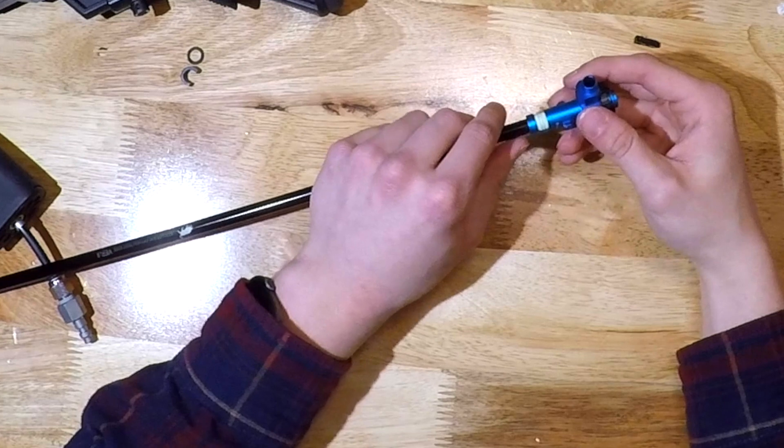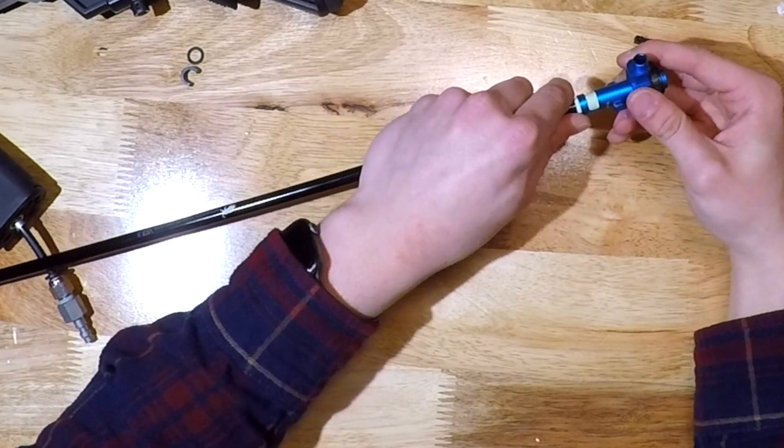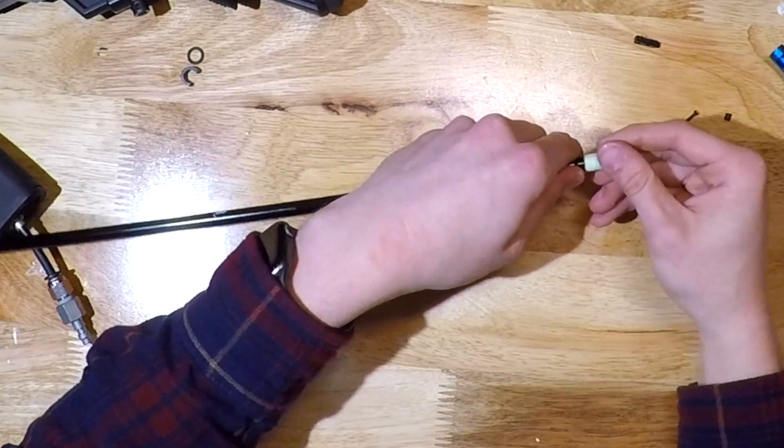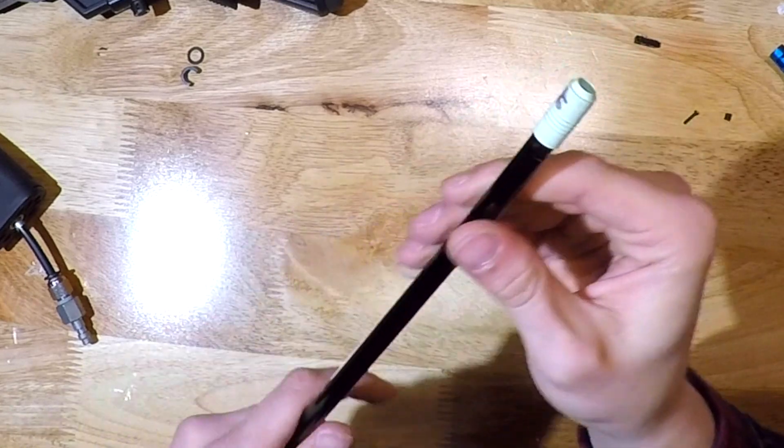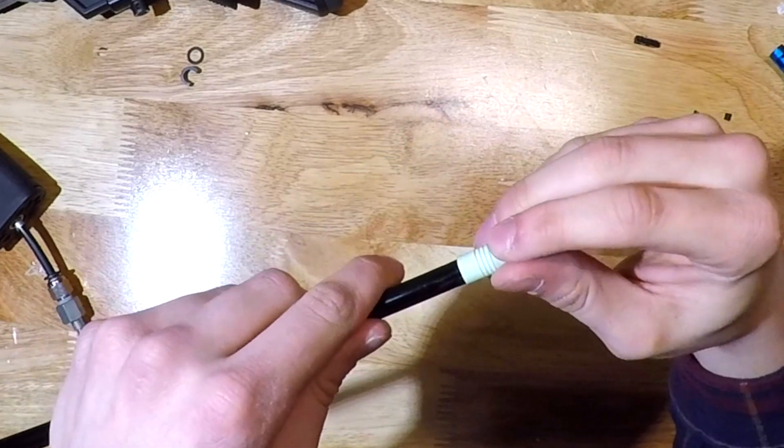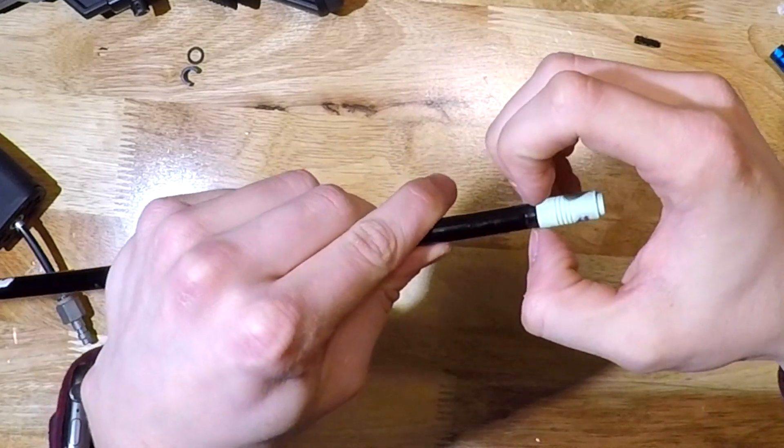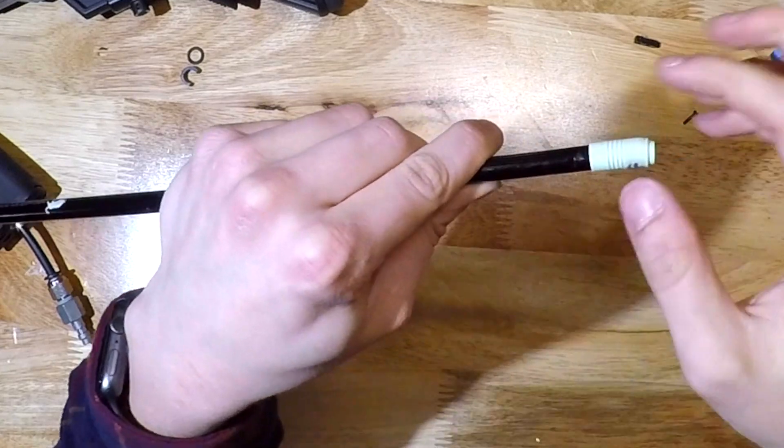So to remove your hop up chamber from your barrel and hop up rubber, just pull on it very gently and you might have to twist it a bit just so you don't yank it off and damage your hop up rubber. So now we could see the hop up rubber on the inner barrel and it's kind of dirty. We'll have to clean that later. But to get it off, just use your fingernails and you want to push it off from the end towards the muzzle of your inner barrel.